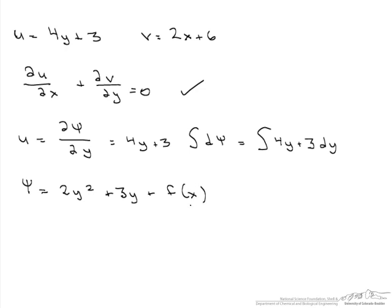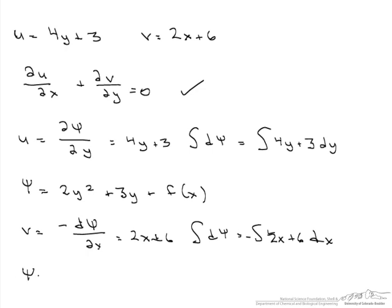Now let's do it for v. So v is the negative derivative of the stream function with respect to x, which equals 2x plus 6. Again we separate and integrate, and this time it is ∫(2x + 6)dx, but let's not forget that negative sign. So now our stream function equals -x² - 6x plus some function of y.